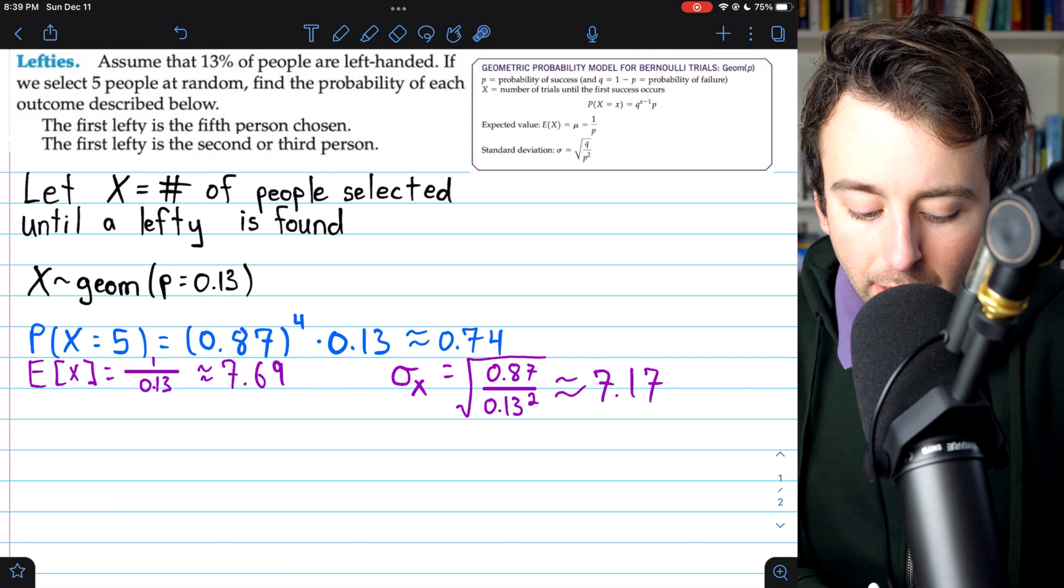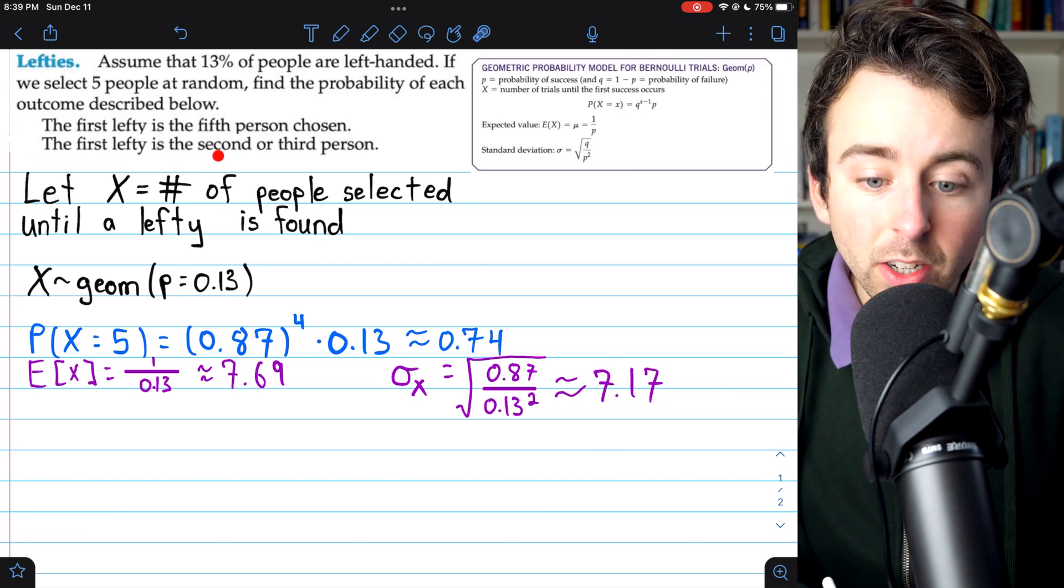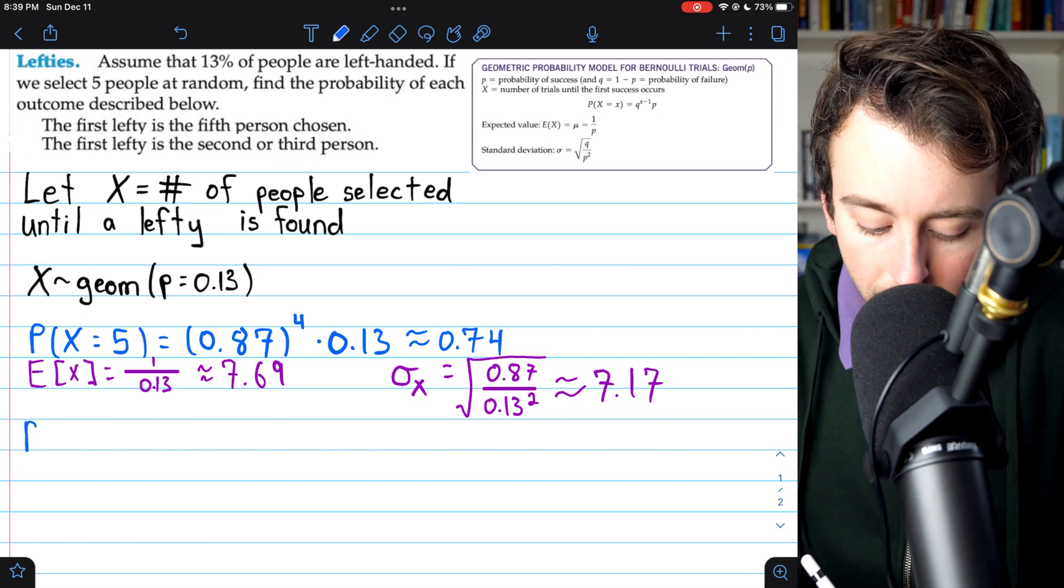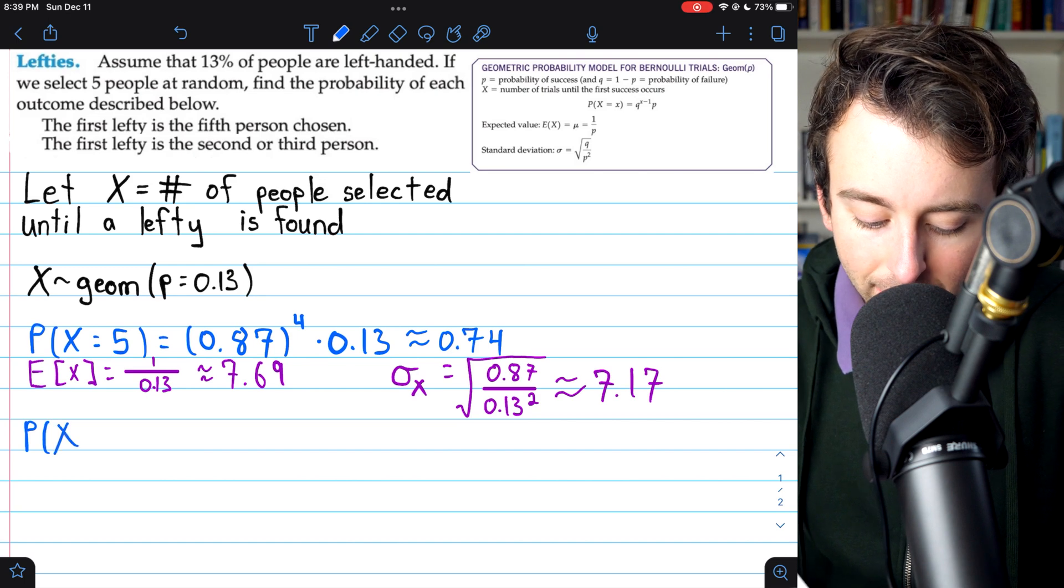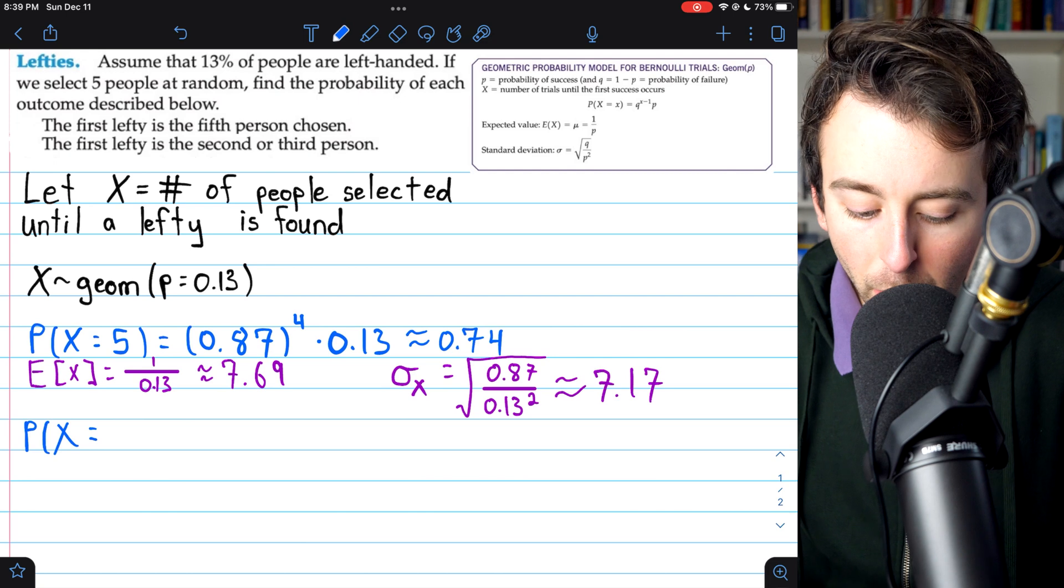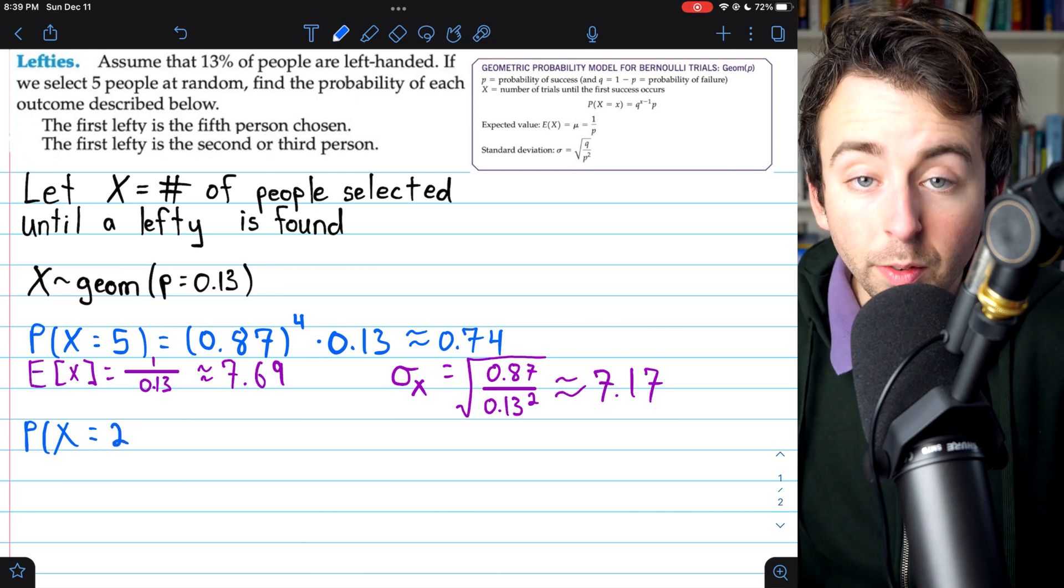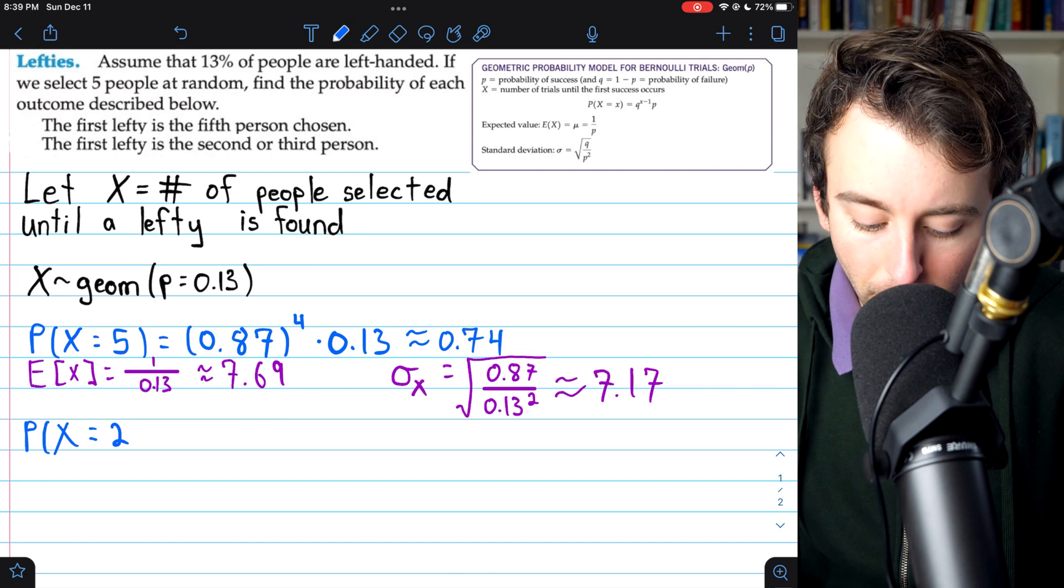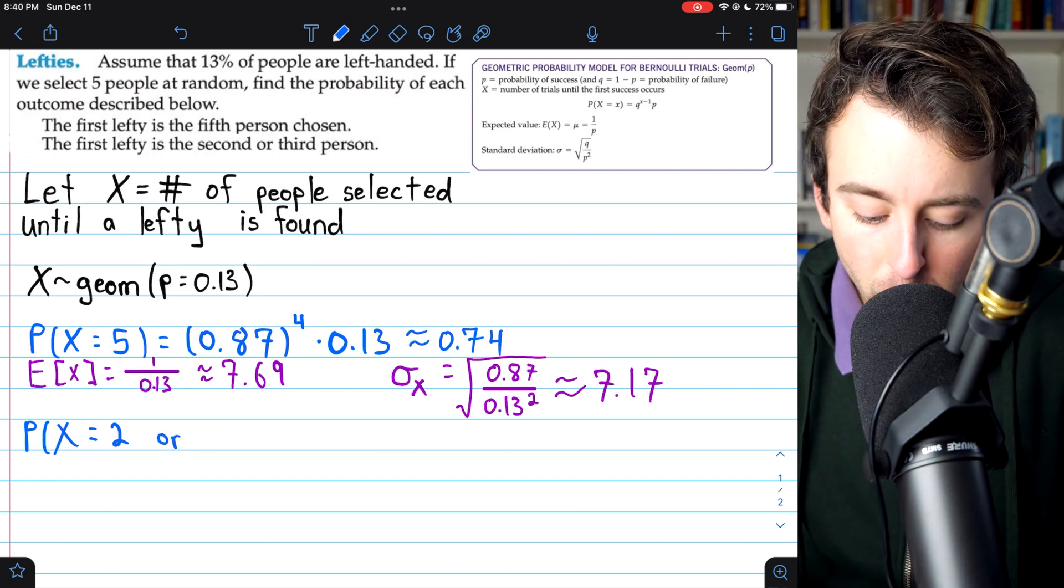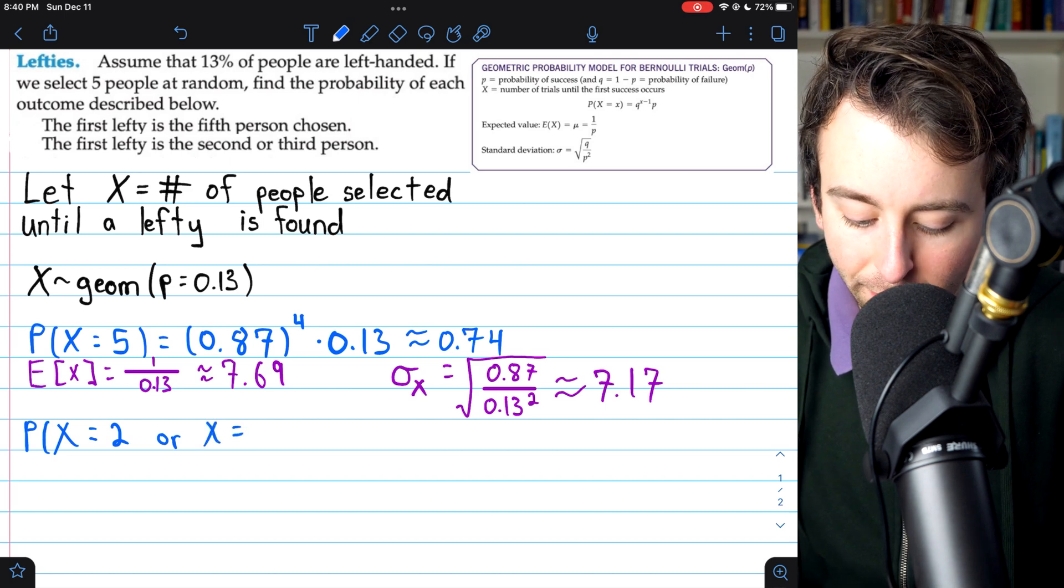Let's go ahead now and answer the next question, the probability that the first lefty is the second or third person. So now we're calculating a probability for what would be considered a union of events. I won't use the union notation, just in case you haven't seen it. But what we're calculating is the probability that x equals 2, the first lefty being the second person, or we're including the probability that the third person is the first lefty.